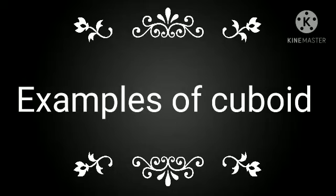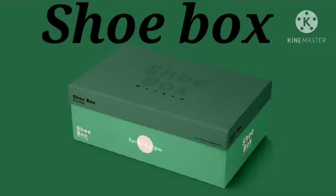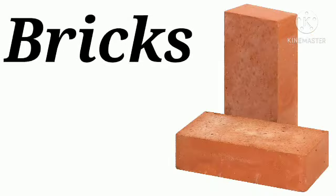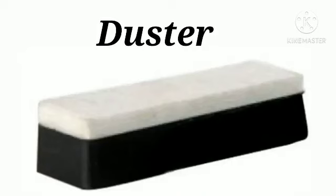Children, now let us explore the different examples of cuboid. Children, look around your surroundings. There are so many things which we use in our daily life that are in the shape of cuboid. For example, match box, shoe box, book, cabinet, bricks, lunch box, pencil box and whiteboard duster.